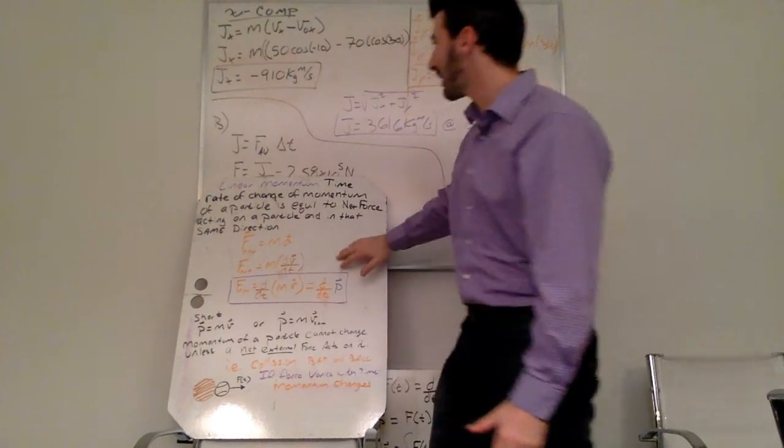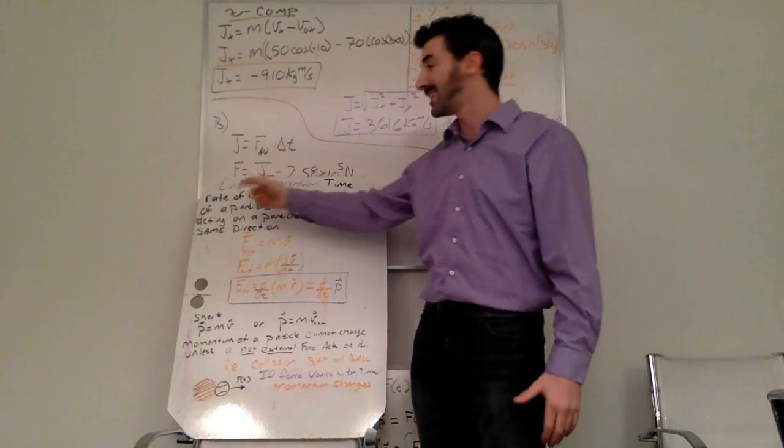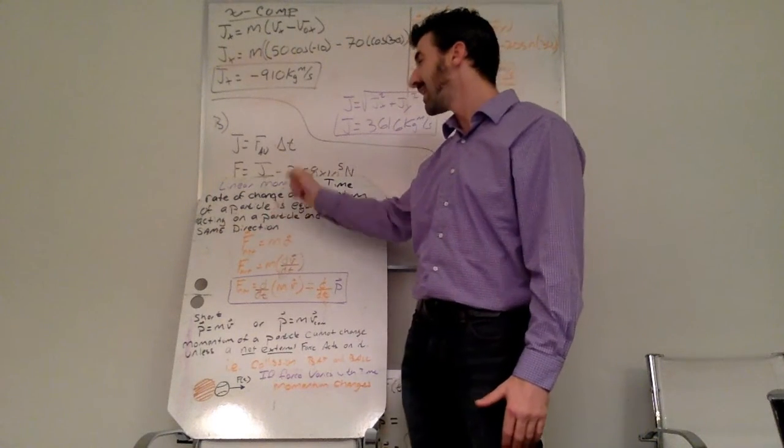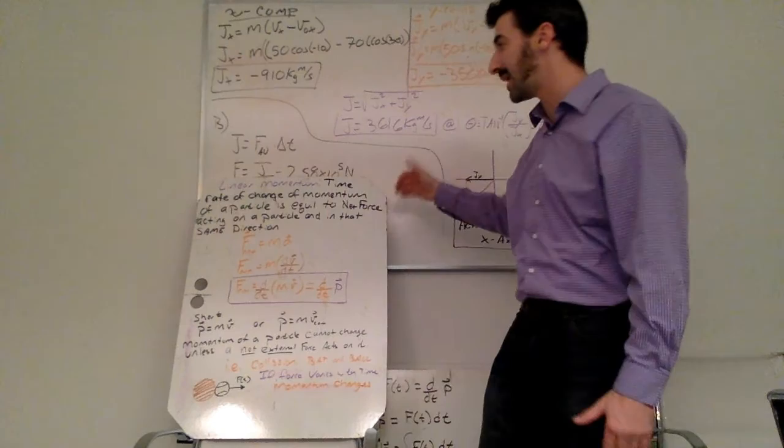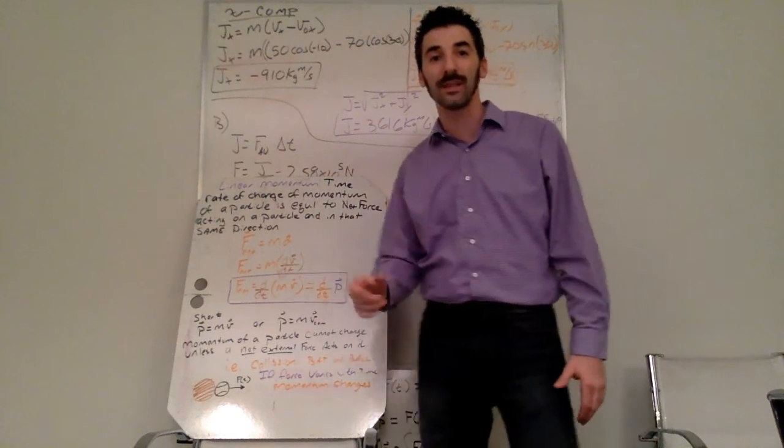I usually don't read things to you but here I'm going to read this definition. Linear momentum by definition is a time or rate of change of the momentum of a particle that has to be equal to the net force acting on a particle and that has to also be in the same direction.